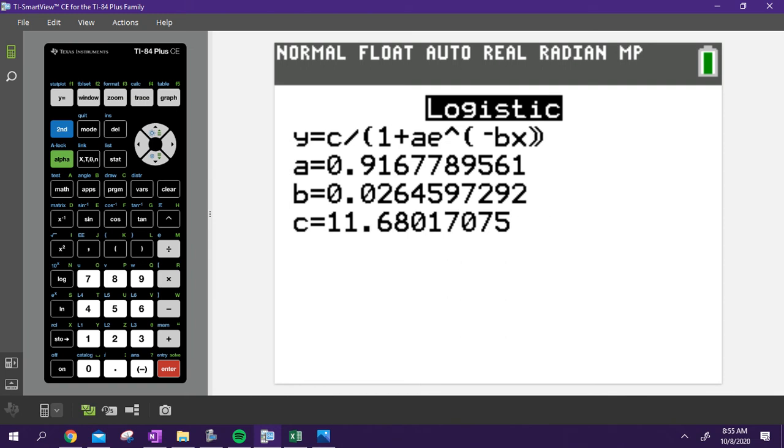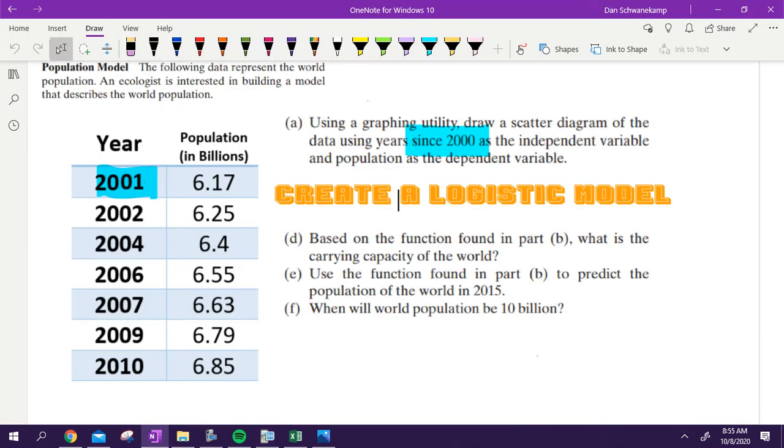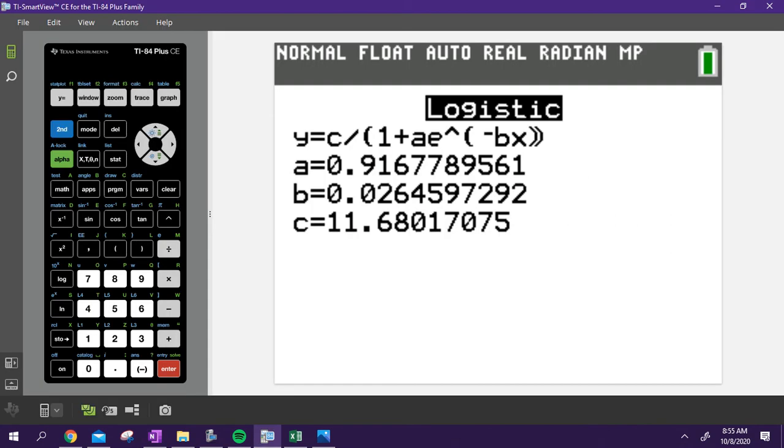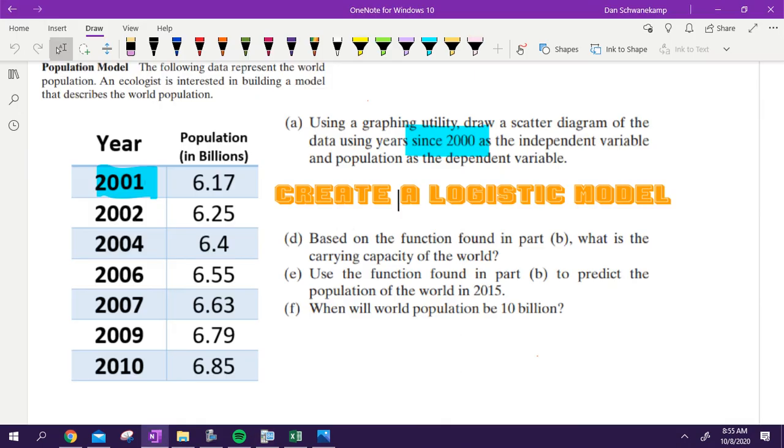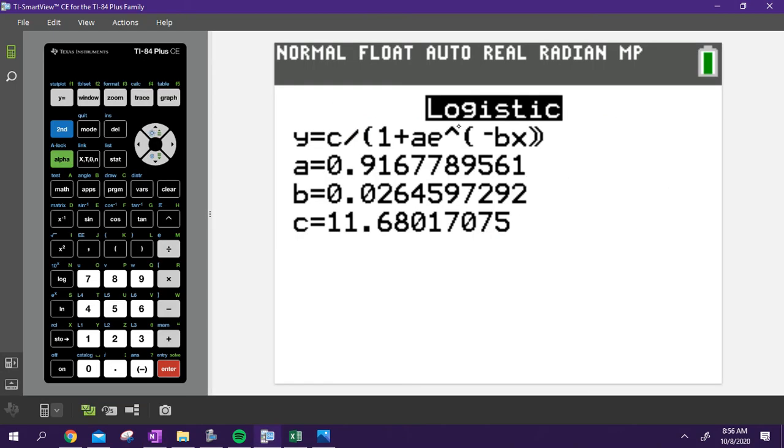Question B was: based on this function, what is the carrying capacity of the world? So as we look at that information right there, what is the carrying capacity of the world? Yeah, the number on top, the C value, the number on top of the fraction is going to be the world carrying capacity. So 11.68 is the answer to that guy right there. So this is 11.680, because the carrying capacity would be the number that goes on top of the fraction on our logistic equation.